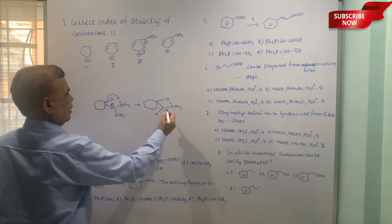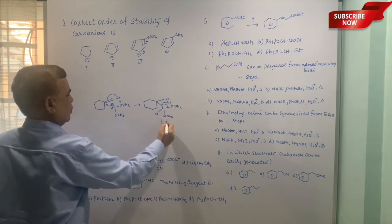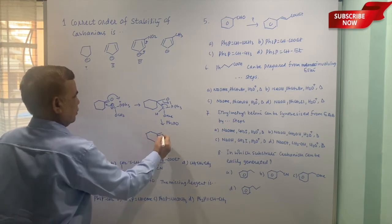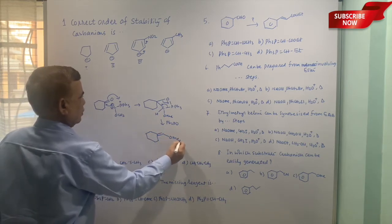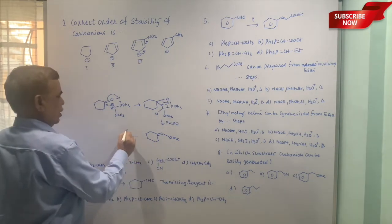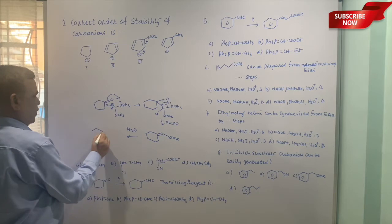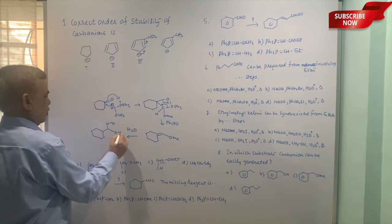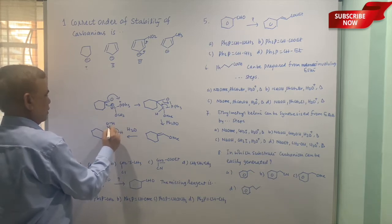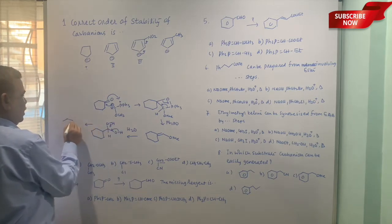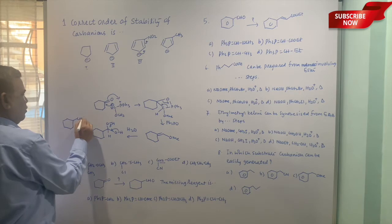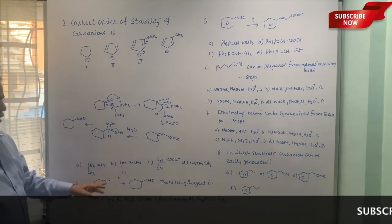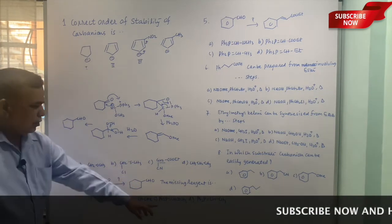Now this will give you a betaine intermediate, that is the characteristic of your phosphorus ylide. This betaine then loses triphenyl phosphine oxide and it becomes this one. On hydrolysis will give you a geminal diol which loses water and eventually this becomes the aldehyde. So this is one of the modified reagent for the homologation. From cyclohexanone you can get this aldehyde, so the third option is correct.